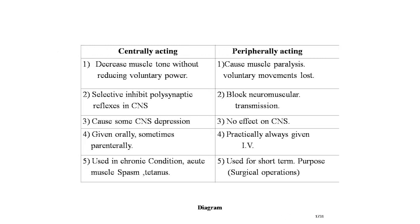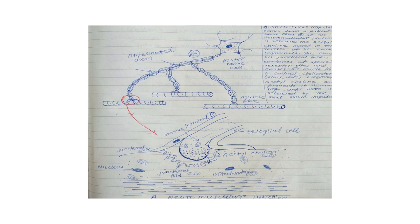Differences between centrally and peripherally acting drugs: centrally acting drugs decrease muscle tone without reducing voluntary power, whereas peripherally acting drugs cause muscle paralysis with voluntary movements lost. Centrally acting drugs selectively inhibit polysynaptic reflexes in the CNS; peripherally acting drugs block only neuromuscular transmission. Centrally acting drugs cause some CNS depression; peripherally acting drugs have no effect on the CNS. Centrally acting drugs are given orally or parenterally; peripherally acting drugs are given intravascularly. Centrally acting drugs are used in chronic spastic conditions, acute muscle spasm, and tetanus; peripherally acting drugs are used for short-term surgical operations.